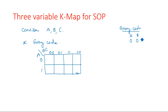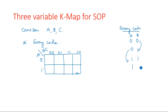Gray code is a unit distance code. For two variables it goes 00, 01, 11, 10 — only one bit changes at a time. For example, 0 changes to 1 is unit distance, then 1 is common and 0 changes. Successive numbers should differ by only one unit distance — that is the definition of gray code.